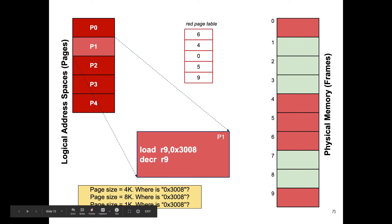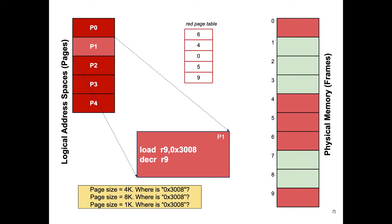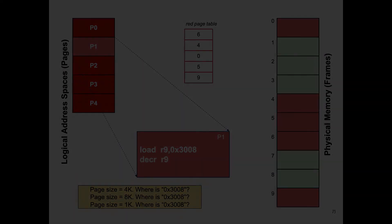Let's pause for a short exercise. Given the same logical address 3008 but with different page sizes of 4K, 8K, and 1K, your job is to determine the physical location of logical address 3008 depending on the page size.